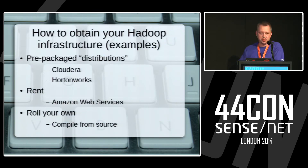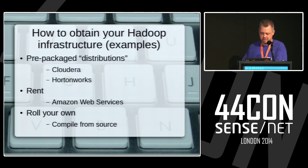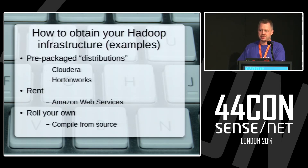How do you get a Hadoop cluster? My recommendation, if you're running this at home, is to get one of those pre-packaged distributions. Cloudera has one, Hortonworks has one, there are several others. You can also rent one using EMR from Amazon — that's a really cost-effective way to do it. Or if you really want, you can compile it yourself, though that's not recommended unless you want to improve the Hadoop ecosystem itself.